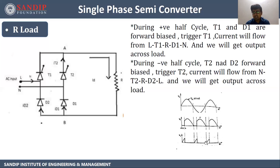Let's understand this with the help of the waveform. This is the AC input supply. During the positive half cycle, we are triggering T1, so we are getting the output because of current flowing through T1 and D1. During the negative half cycle, we are triggering T2, so the output we are getting is because of T2 and D2. The last waveform is the drop across the thyristors — during each half cycle, we get only a portion of the output, and the remaining part is the drop across the thyristor.